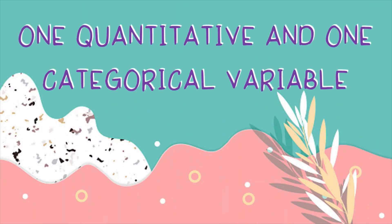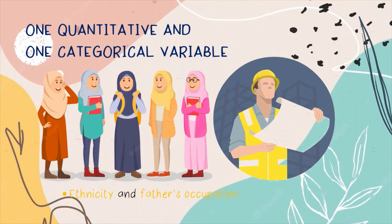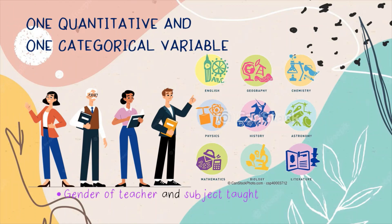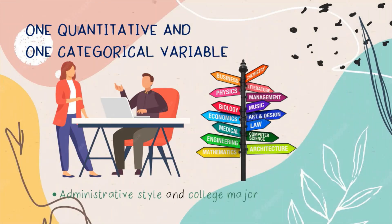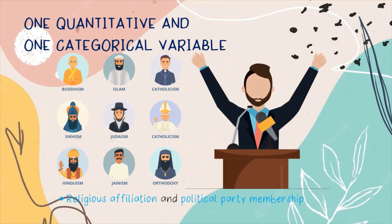One quantitative and one categorical variable — examples are: ethnicity and father's occupation; gender of teacher and subject taught; administrative style and college major; religious affiliation and political party membership.